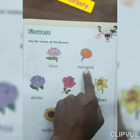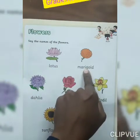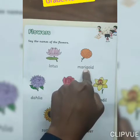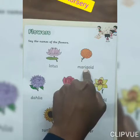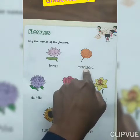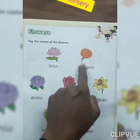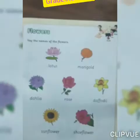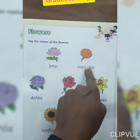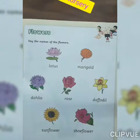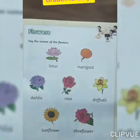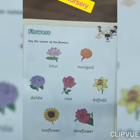Now look at here everyone. Which flower is this? Marigold. And which color of marigold? Orange and yellow. Which flower is this? Marigold. And which color of marigold? Yellow and orange.